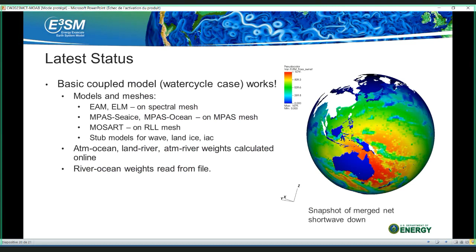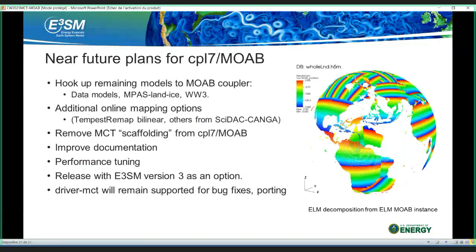Some future plans for CPL7 and MOAB: hook up the remaining models to the MOAB coupler — the data models, MPAS land ice, and WaveWatch 3. Add additional online mapping options; Tempest Remap recently added bilinear mapping weights. Incorporate work from the Kanga project. Then remove the MCT scaffolding from the MOAB coupler. There will still be an MCT coupler — there are two separate directories, driver-MOAB and driver-MCT, selectable at configure time, and the MCT one will stay around for a while. We'll improve documentation, do performance tuning, and release it with E3SM version 3 at least as an option.